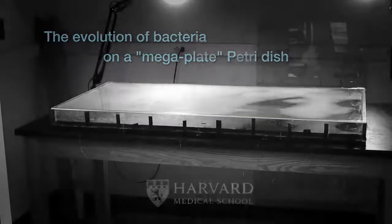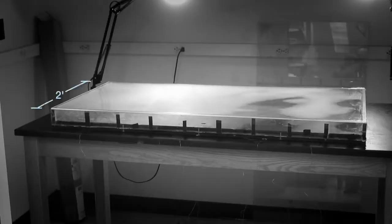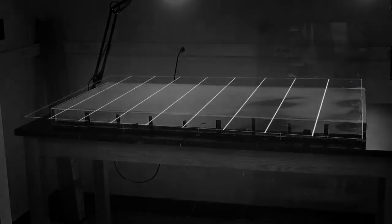So what we ended up building was basically a petri dish, except that it's two feet by four feet. And the way we set it up is that there are nine bands and at the base of each of these bands we put a normal petri dish thick agar with different amounts of antibiotic.